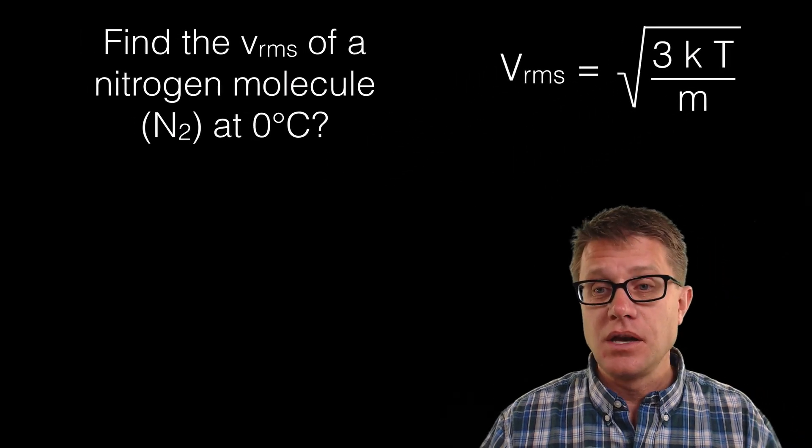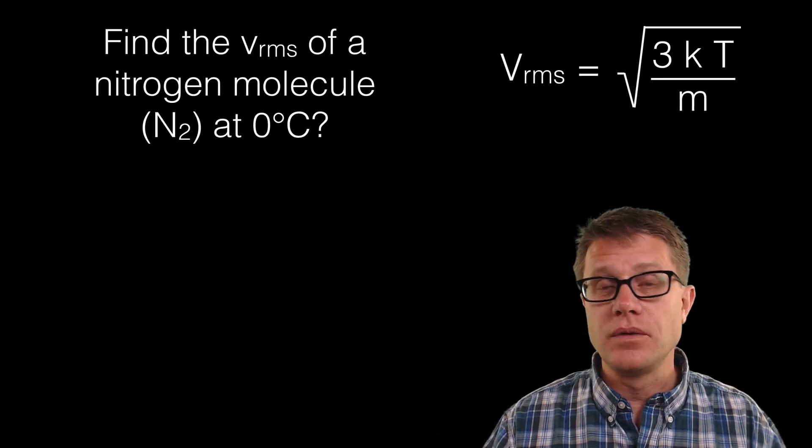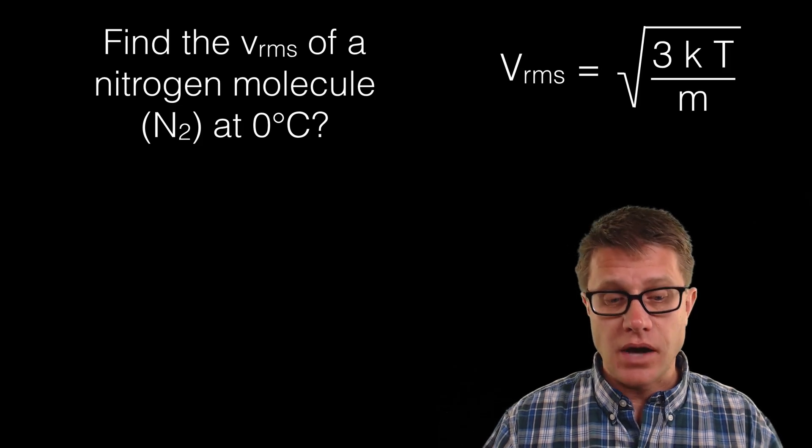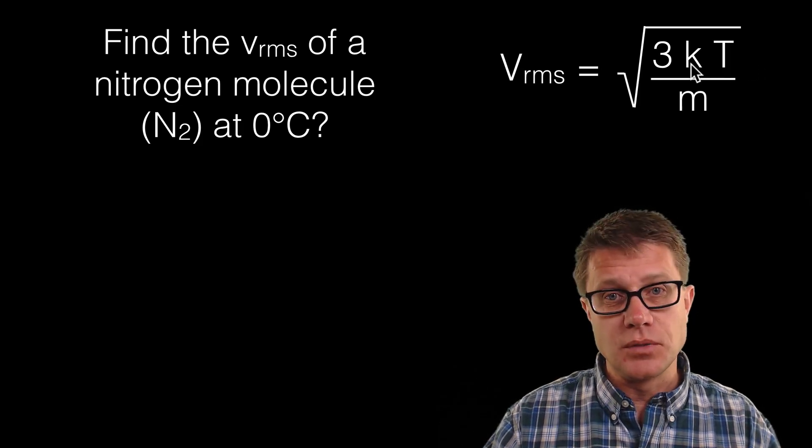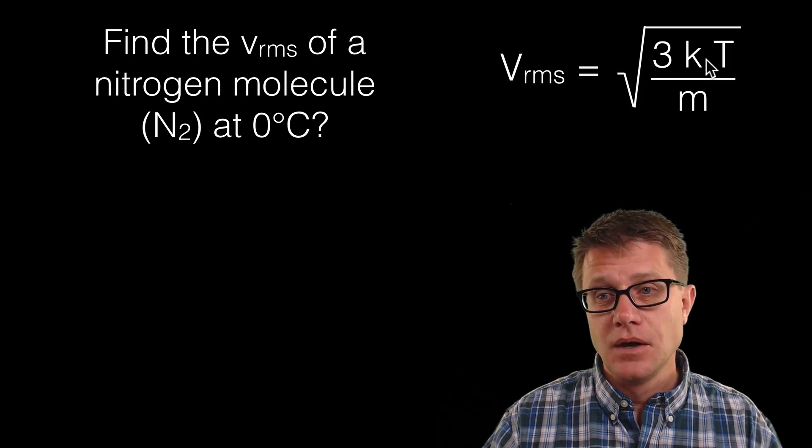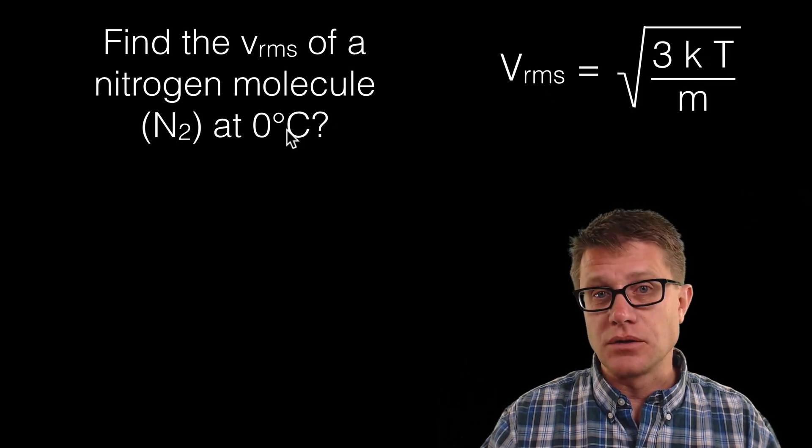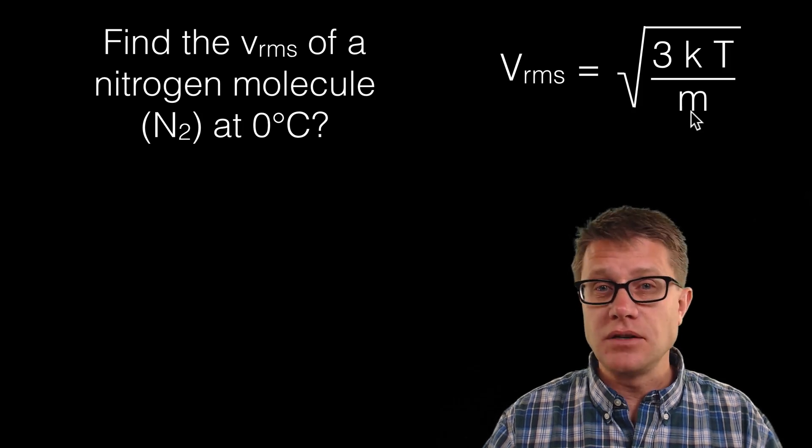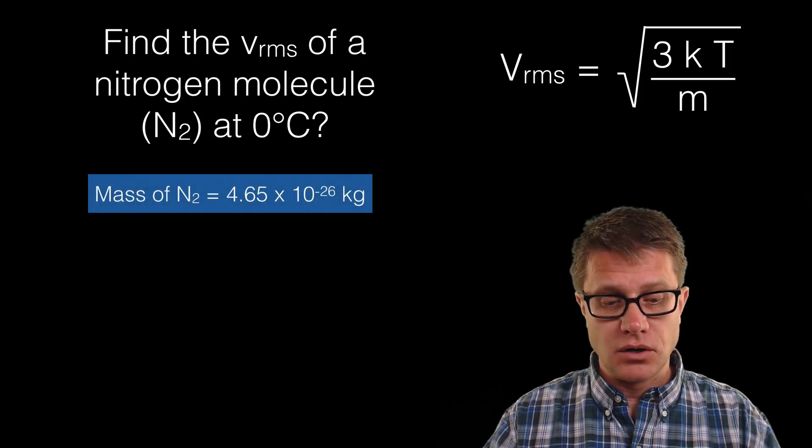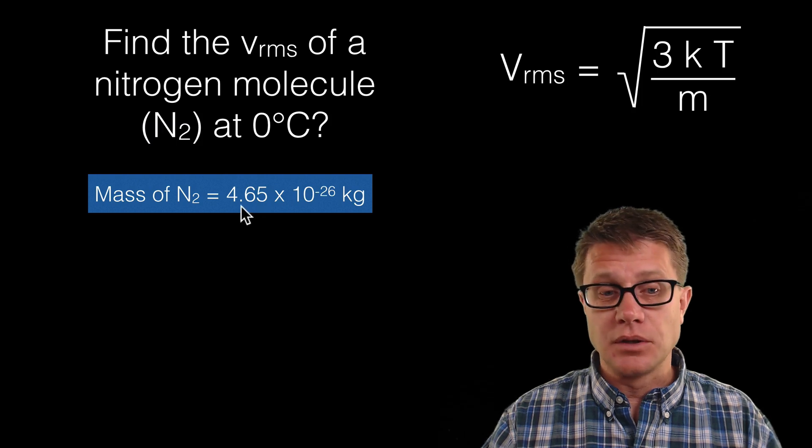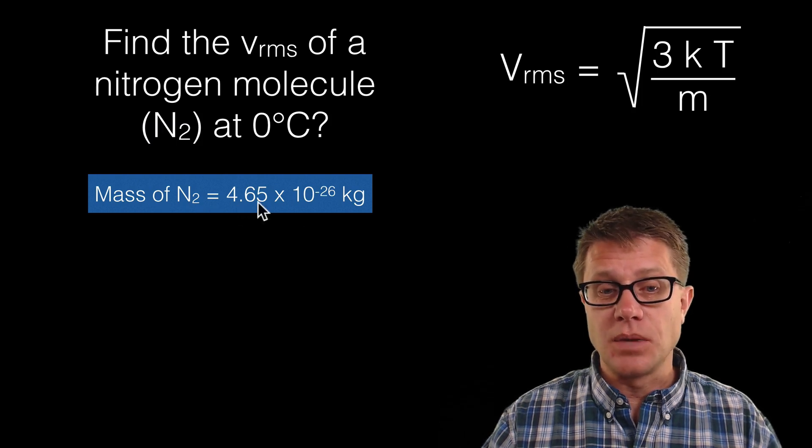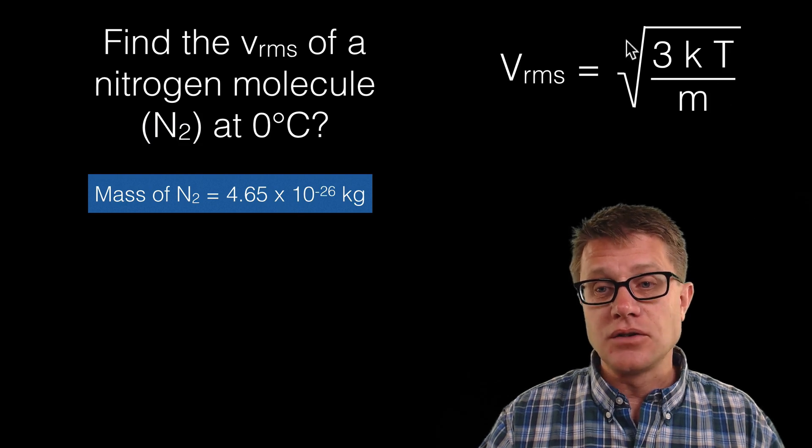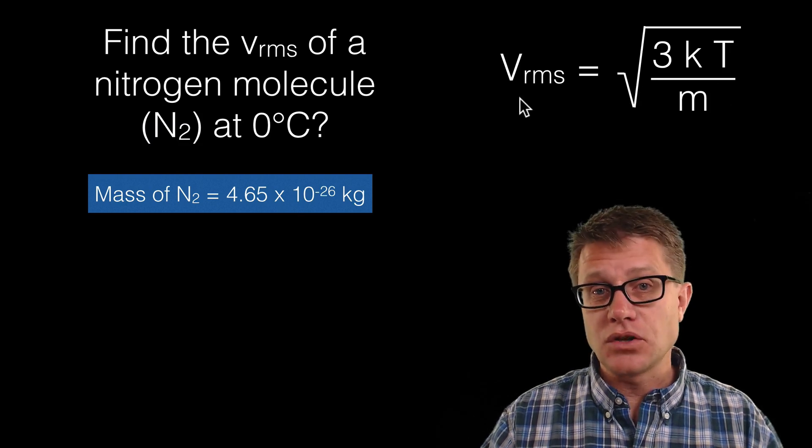And so this could be a quantitative problem that you would solve. Find the root mean square of a nitrogen molecule at 0 degrees Celsius. So how would you solve this problem? Well we know the Boltzmann constant. We know the temperature since it is at 0 degrees Celsius. We then have to find the mass of a nitrogen molecule. So you would have to use a little bit of chemistry. And so we could use the periodic table to figure out the mass of a nitrogen molecule is equal to 4.65 times 10 to the negative 26. We plug all those values in here and then we would find the root mean square of nitrogen.